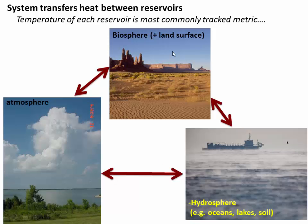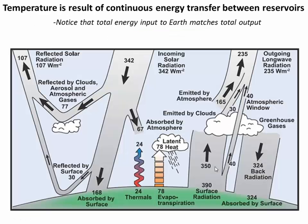Recall that there are three heat reservoirs on Earth: the biosphere, the atmosphere, and the hydrosphere. They all store heat energy and they transfer it between themselves. Temperature at any given time in any one of those reservoirs is a function of how much energy is stored in that reservoir. The amount of energy stored is a function of how much energy goes in versus how much energy goes out. If energy in equals energy out, then the temperature of the system should be stable.